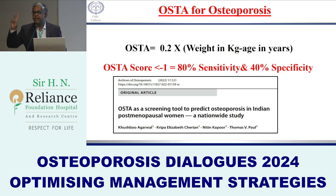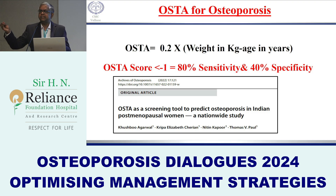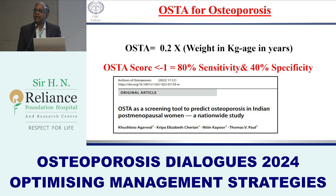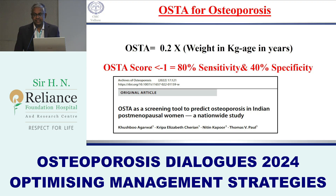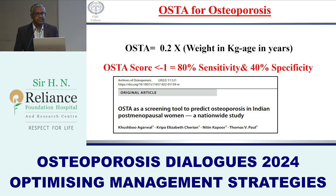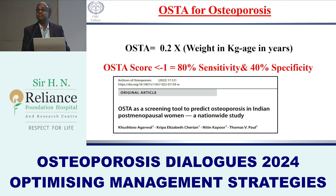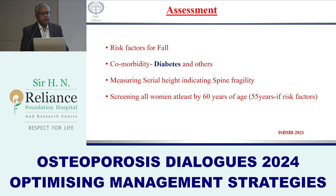One such tool is OSTA — the Osteoporosis Self-Assessment Tool for Asians. This can be used in primary or secondary care settings and requires only two variables: weight and age. The formula is: (weight minus age) multiplied by 0.2. For example, if weight is 40 kg and age is 60, that gives (40 minus 60) × 0.2 = minus 4, indicating high risk. This score has 80% sensitivity and 40% specificity, validated in about 66,000 patients.